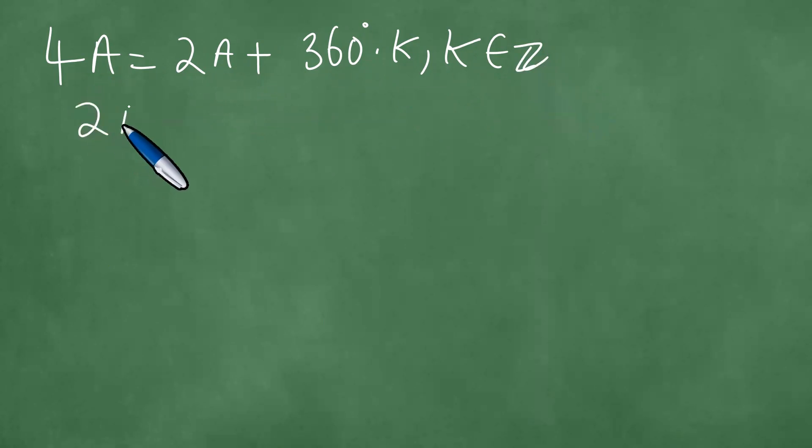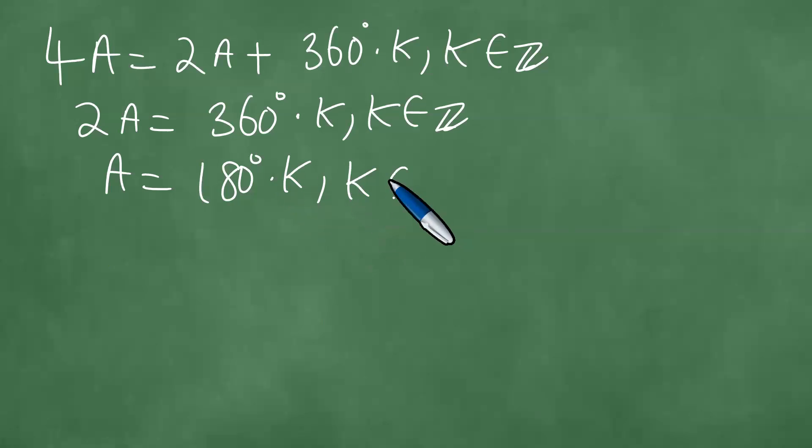This means 2A is 360 degrees times k, where k is in Z. Dividing both sides by 2, A equals 180 degrees times k, where k is in Z.